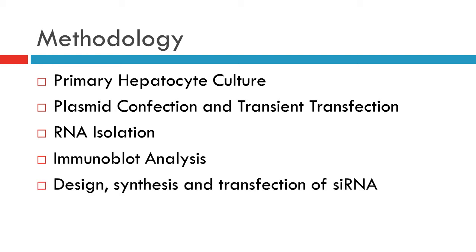The last method used was design, synthesis, and transfection of siRNA. A target sequence in the rat SREBP1 mRNA was identified. Primary rat hepatocytes were cultured in antibiotic-free medium the day before transfection. On day 1, hepatocytes were transfected with 200 picomoles of siRNA per 20 cm² dish. On day 2, the medium was supplemented with 100 nanomoles insulin and 25 millimolar glucose. 24 hours later, cells were harvested and either RNA or proteins were prepared.